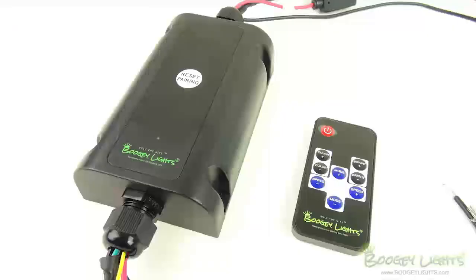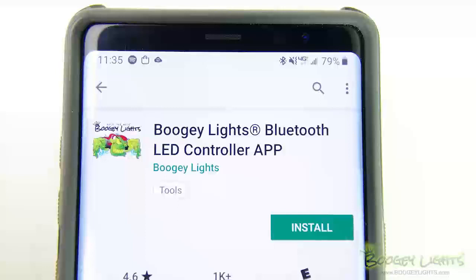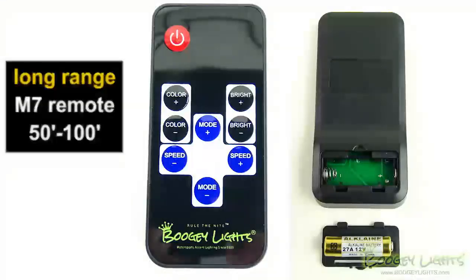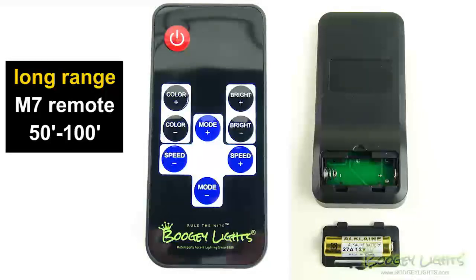This controller is a combo controller. You can operate it either using your Bluetooth enabled smartphone and our free Android or iOS app, or the included RF Wireless M7 Long Range Handheld Remote. The RF M7 Long Range Remote has an effective control range of up to 100 feet, depending upon the operating environment.